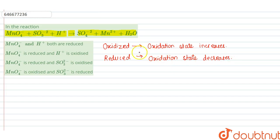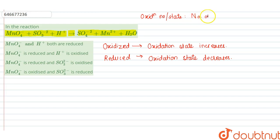Now we will see what oxidation state is. Oxidation state is the number of electrons that an atom gains or loses when it is present in a molecule or in a polyatomic ion. When an atom gains electrons, its oxidation state is negative. When it loses electrons, the oxidation state is positive. Now we will see the reaction.